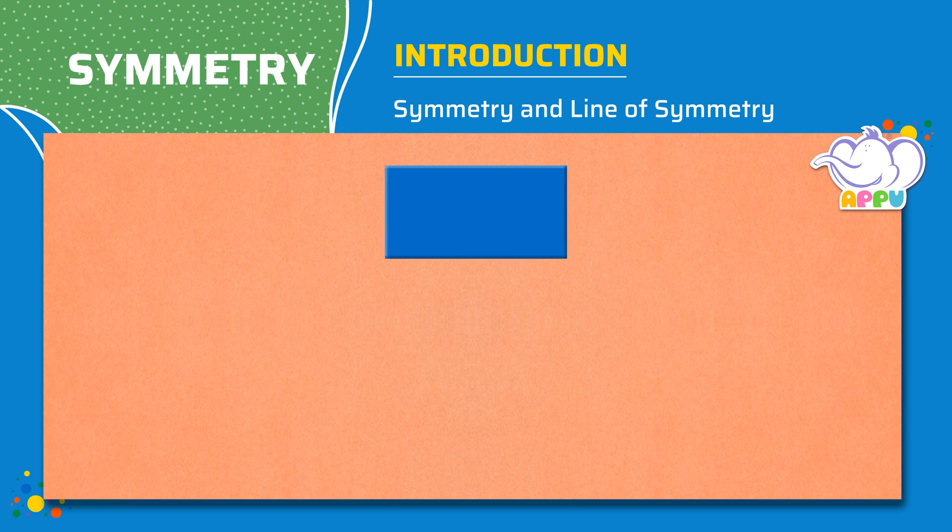This is a rectangle. Let's fold this shape into half. Both the halves exactly match each other. This shape is said to be symmetrical. The fold line is called the line of symmetry.